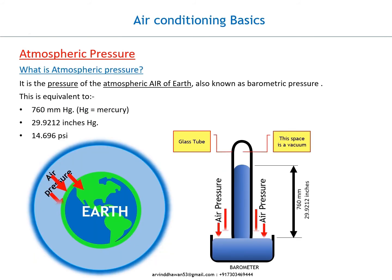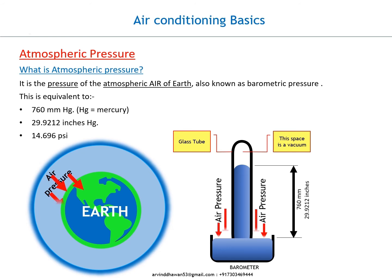What is atmospheric pressure? It is the pressure of the atmospheric air of Earth, also known as barometric pressure. This is equivalent to 760 mmHg (HG = mercury), 29.9212 inches HG, and 14.696 PSI.